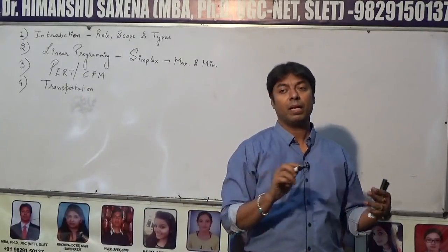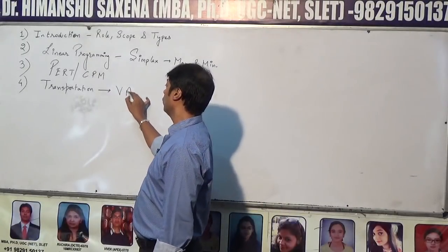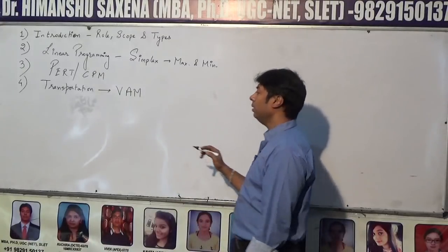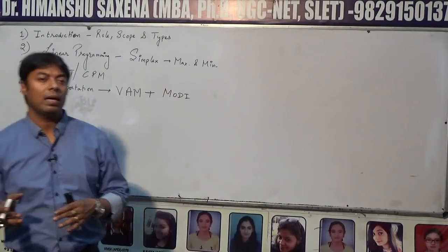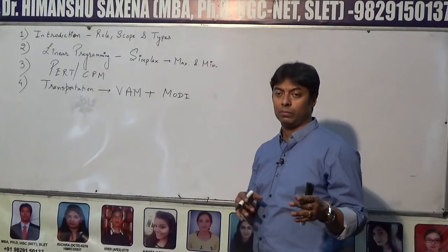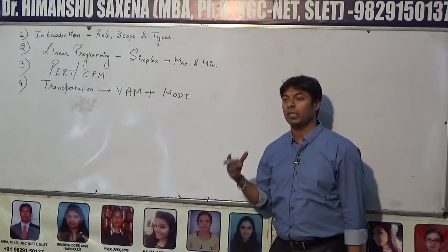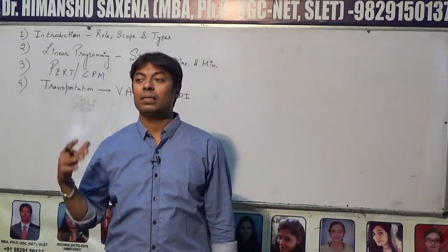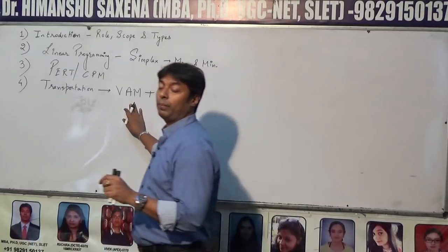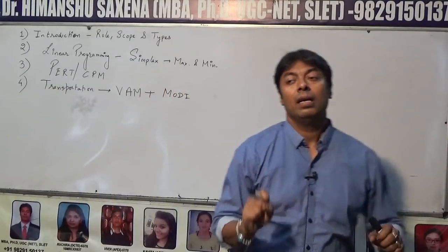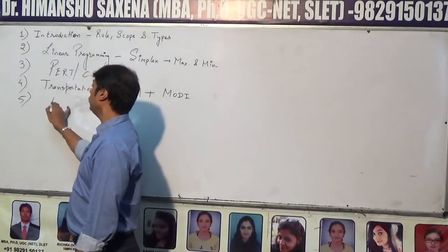Next comes the transportation model, which is solved in two phases. In the first phase, we calculate the initial optimum transportation cost either by the Northwest Corner method, the Least Cost method, or Vogel's Approximation Method. Vogel's Approximation Method is the most important. The second phase uses the Modified Distribution method (the U and V model), where U variables are used for rows and V variables for columns, to derive the optimum solution.